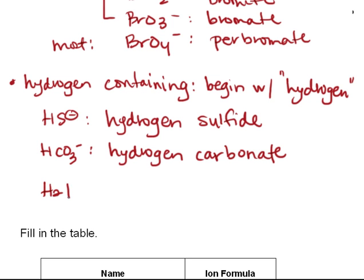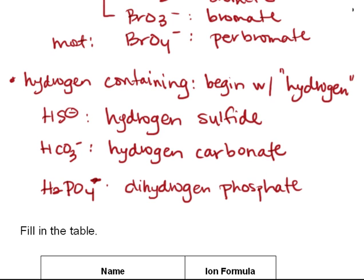Also, you can have more than one hydrogen present. So if you had H2PO4-, this would be dihydrogen phosphate. So that's a rule for hydrogen containing.